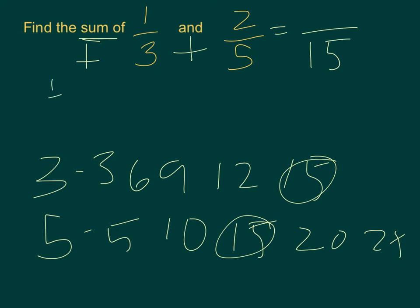Now we do 1/3 times something equals something over 15. 3 times what gives us 15? 5. Whatever you do to the bottom, you do to the top. So 5/15.